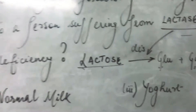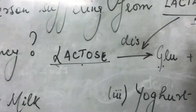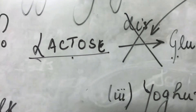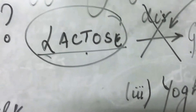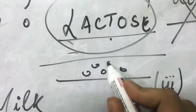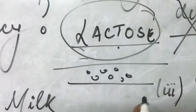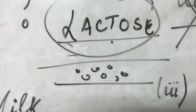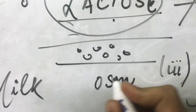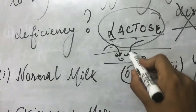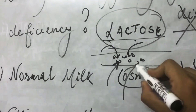In a person suffering from lactase deficiency, lactase is absent, so lactose cannot be converted into glucose and galactose. This conversion does not take place, and lactose accumulates in the small intestine whenever that person takes any milk-containing product. Lactose is an osmotically active molecule, so it draws water into the lumen of the small intestine.